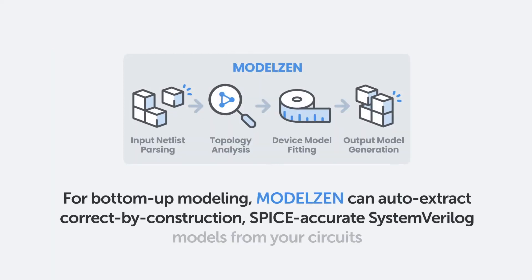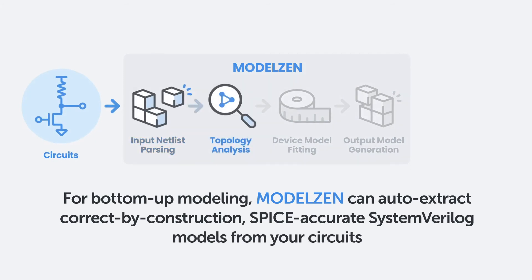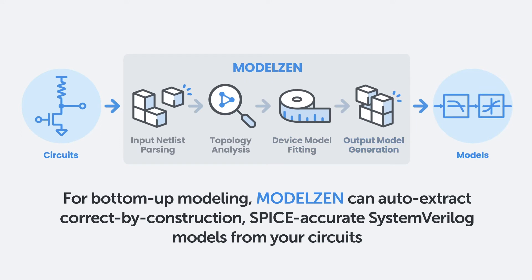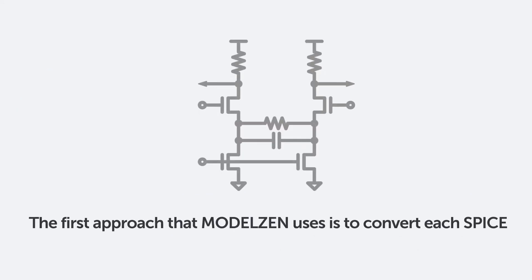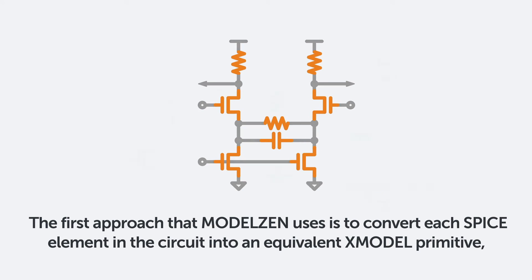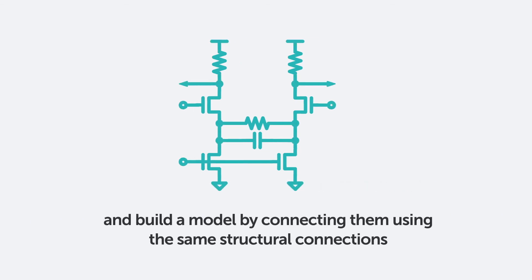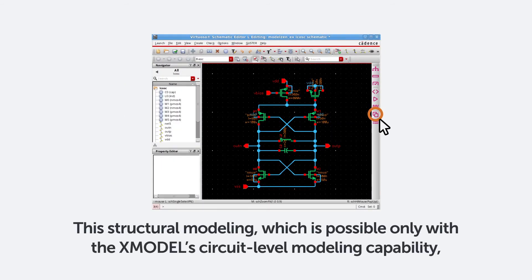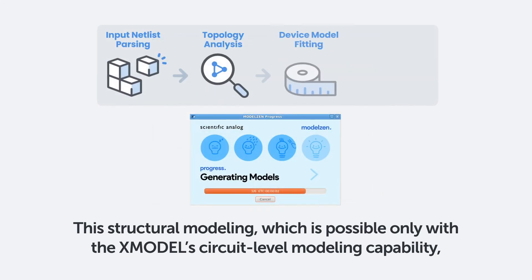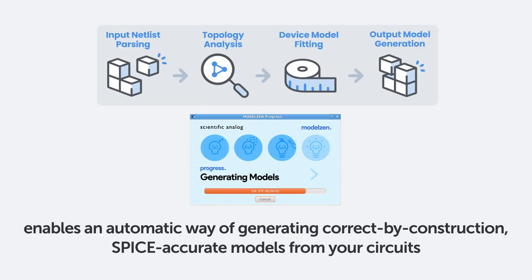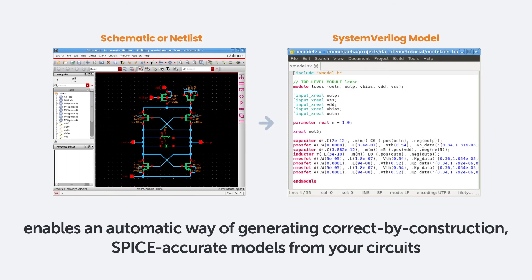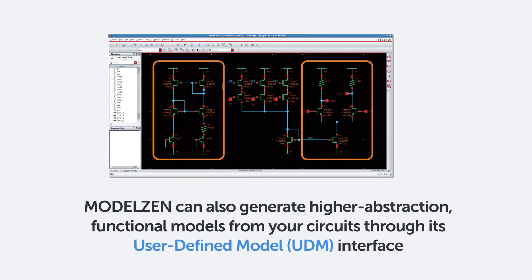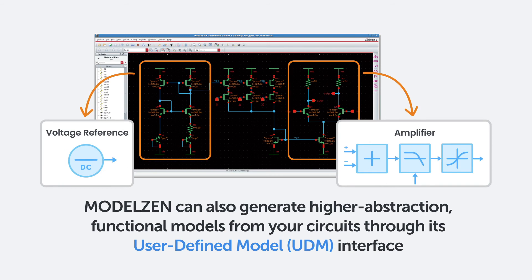For bottom-up modeling, Model XAN can auto-extract correct-by-construction, SPICE-accurate SystemVerilog models from your circuits. The first approach is to convert each SPICE element in the circuit into an equivalent XModel primitive and build a model by connecting them using the same structural connections. This structural modeling, which is possible only with the XModel circuit-level modeling capability, enables an automatic way of generating correct-by-construction, SPICE-accurate models from your circuits. Model XAN can also generate higher-abstraction functional models from your circuits through its user-defined model interface.